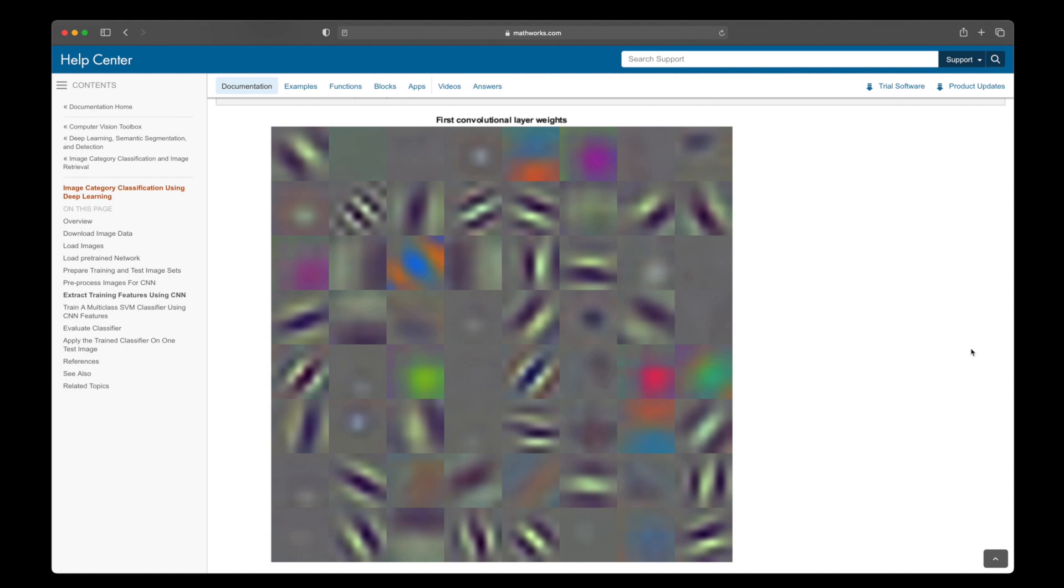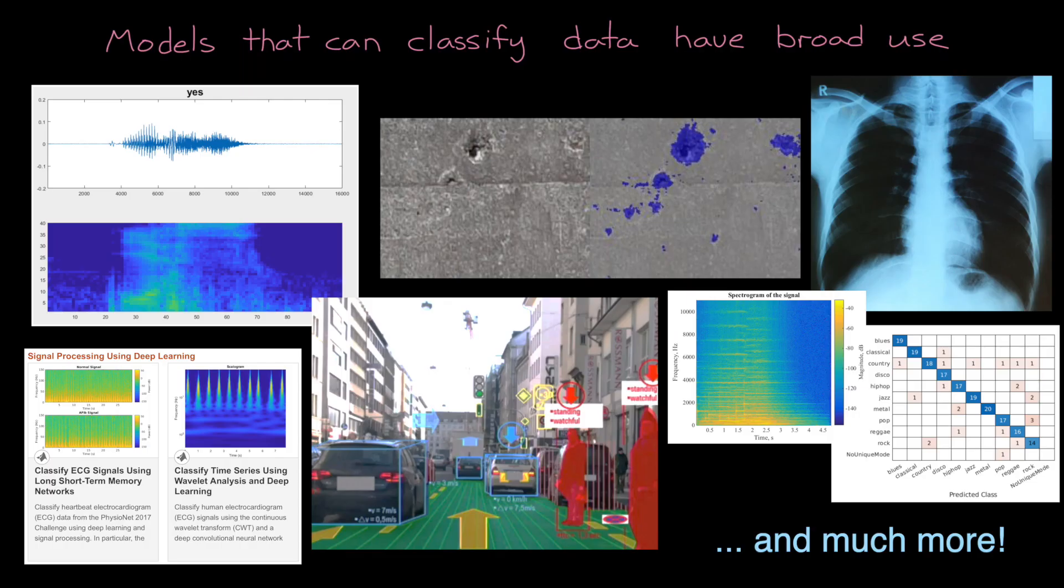Again, it seems likely that these aren't the features that a human would come up with if they were trying to define the features of a flower. At least, I don't think I would. But this is why deep learning is so powerful for certain engineering problems, specifically problems that involve finding patterns in an image where the defining features are difficult to describe.